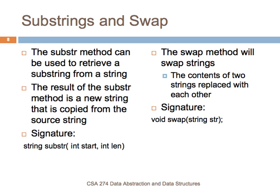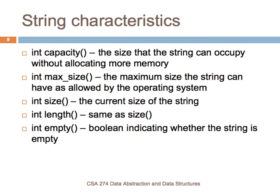There are also methods for getting the characteristics of strings. The capacity method will give you the size that the string can occupy without allocating more memory. Max size tells you what the maximum size the string can be — that's going to be the same value on the same machine and should never change unless you move to a different machine. The size operation tells you the size of the current string, which is the same as doing the length. And the empty operation tells you whether or not the string is empty — it's actually a boolean.